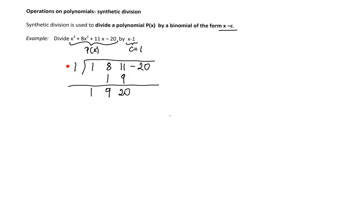1, the c, multiply by 20, and write below the last coefficient, negative 20. 1, the c, multiply by 20, and add those coefficients. That's going to be 0.